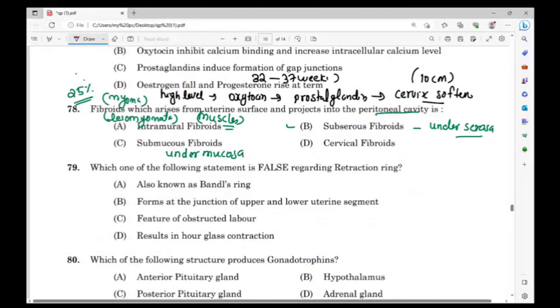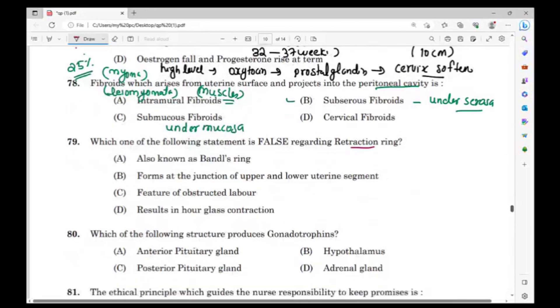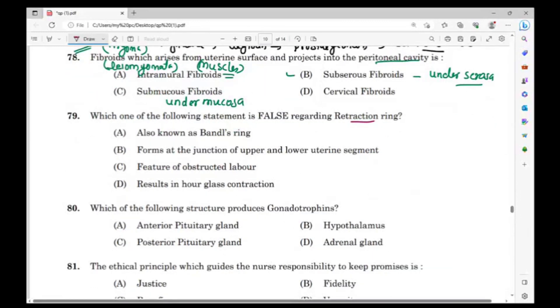Next question: Which of the following statement is false regarding retraction ring? Option: also known as Bandle's ring, forms at the junction of upper and lower uterine segment, feature of obstructive labor, results in hourglass contraction.